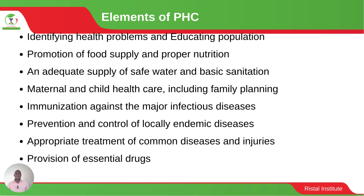The elements of primary health care include: identifying health problems within the community and educating the community about ways of solving or preventing those problems; provision of food supply and proper nutrition; provision of adequate safe water and basic sanitation; promotion of maternal and child health including provision of family planning; immunization against major infectious diseases and prevention of endemic conditions; treatment of common conditions and injuries; and provision of essential drugs.